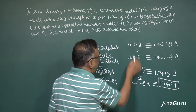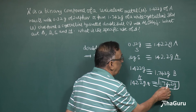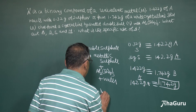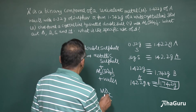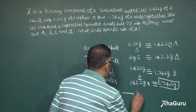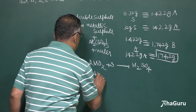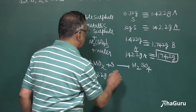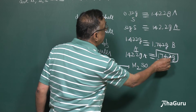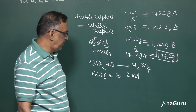From the given information, 142.2 grams of A — the compound of a univalent metal — corresponds to 174.2 grams of the sulfate. If we take the binary compound as MOₓ, it reacts with sulfur to form M₂SO₄. So 142.2 grams of A corresponds to 2 moles of MOₓ, and 174.2 is the molecular mass of M₂SO₄. From this, subtracting 96 — the formula weight of the sulfate ion.